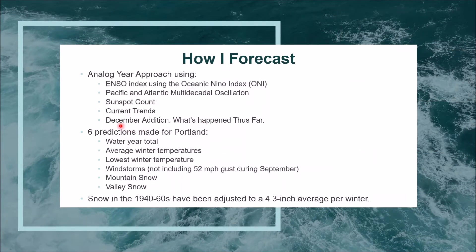My methods haven't changed much from October. The biggest change is I take a look at what's happened thus far and adjust accordingly. I look back at previous years and match them up to the current year's conditions using the current ENSO index, the Pacific and Atlantic multi-decadal oscillations, the sunspot count, and any historically significant trends that may apply. I will explain these the best I can as I go over them.